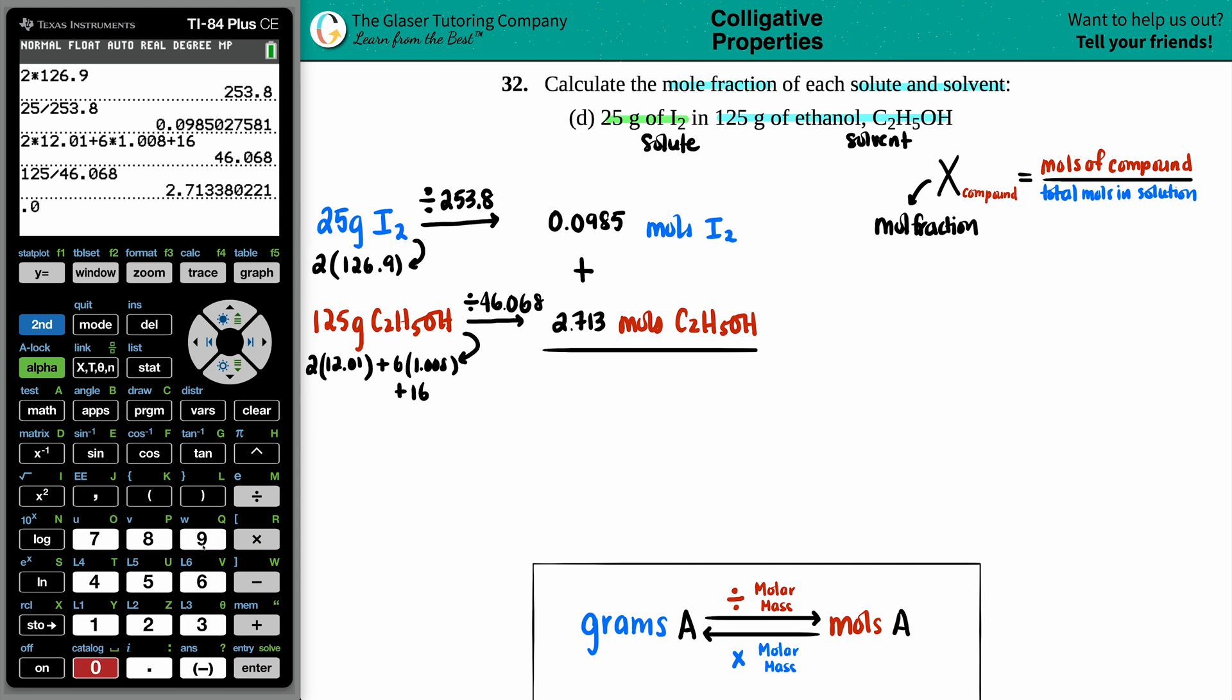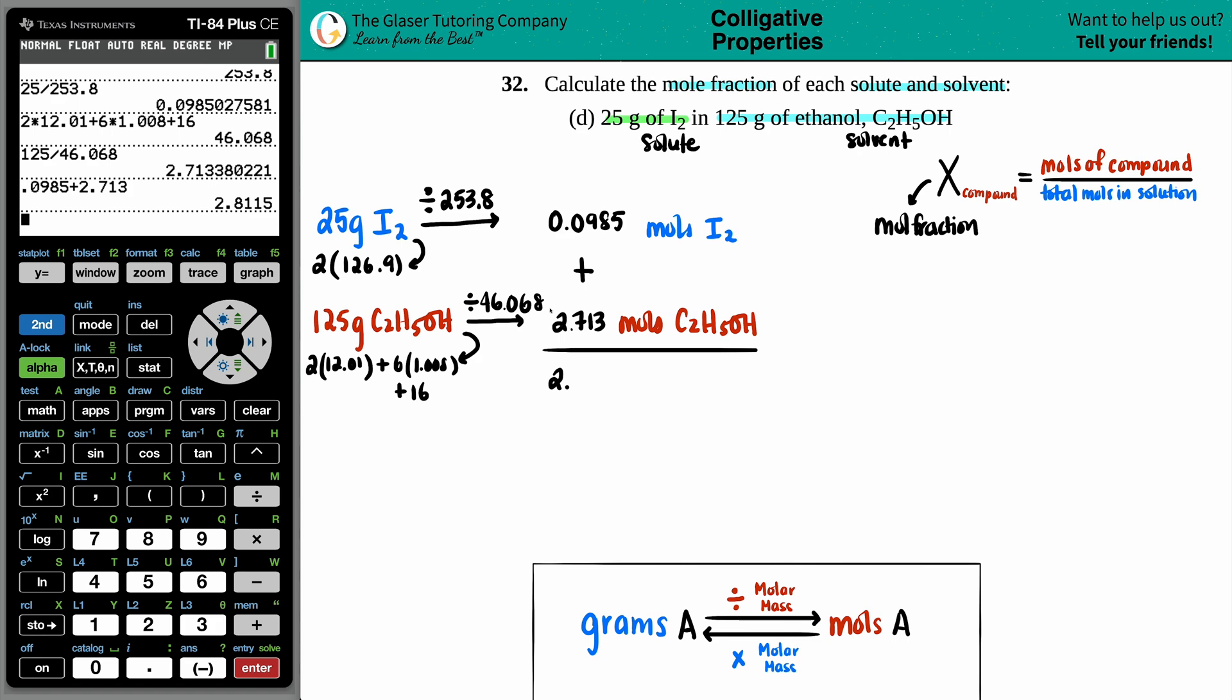So 0.0985 plus the 2.713 and I get 2.8115 and that's the total moles.